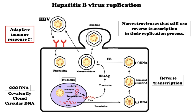CCC DNA serves as a template for transcription of subgenomic and genomic RNAs. The HBV replication cycle begins with genome encapsidation. After capsidization, DNA polymerase mediates reverse transcription of pre-genomic RNA, leading to minus-stranded DNA, which is subsequently converted to positive-stranded DNA by reverse transcription. The nucleocapsid then interacts with surface proteins in the endoplasmic reticulum to become mature virions and leave the cell.